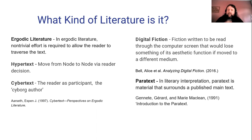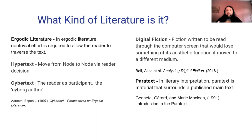Paratext started as a literature term meaning all the things around the text — chapter structure, page setting and font — and how that shapes how you read. It's been broadened into game studies to talk about menus and other setups in computer games, and in role-playing games. Paratext is a concept I think is quite important to understanding the role of wikis as literature.